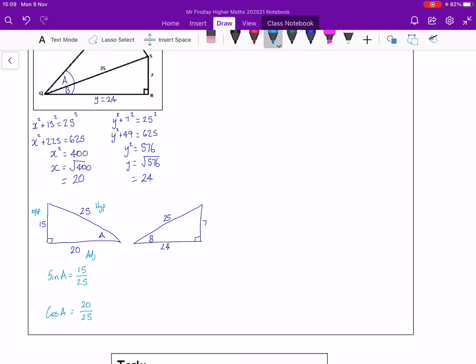And my second triangle is B in between 25, 24 and a height 7. Again, B, there's my angle. Opposite, adjacent, hypotenuse. So sine B, 7 over 25. Cos B, 24 over 25.